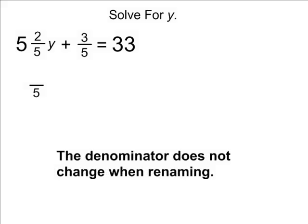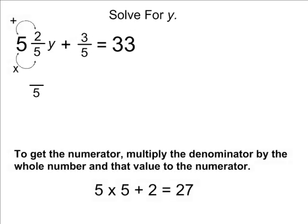When renaming mixed numbers as improper fractions, remember the denominator does not change, that stays the same. But to get the numerator, it is a two-step process. Simply take the denominator and multiply it by the whole number, that would give us a product of 25, and then add that product to whatever the numerator is. In this case the numerator is 2, and 25 plus 2 is 27.